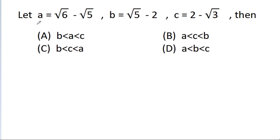In this video, we have given that a is equal to root 6 minus root 5, b is equal to root 5 minus 2, and c is equal to 2 minus root 3. We have to choose the correct option from the options given.